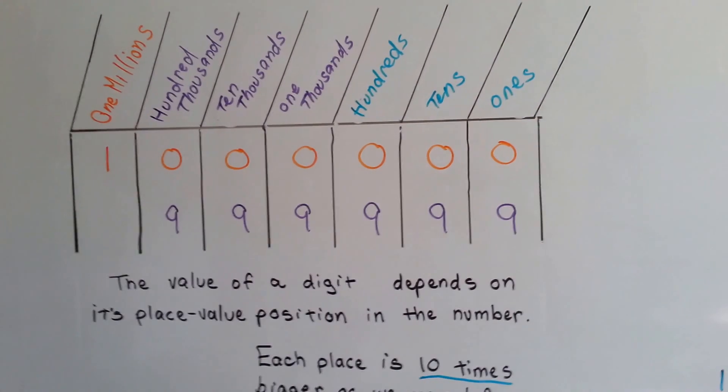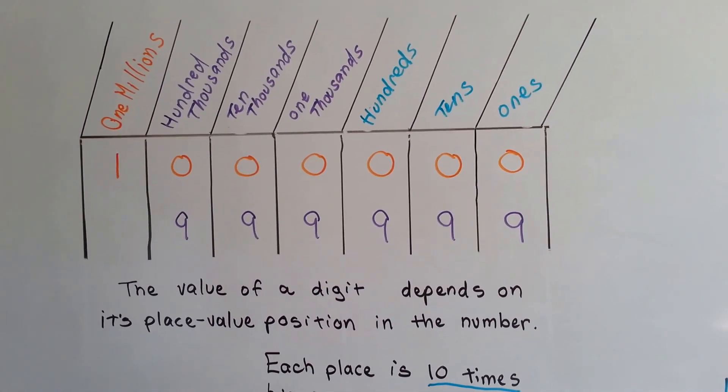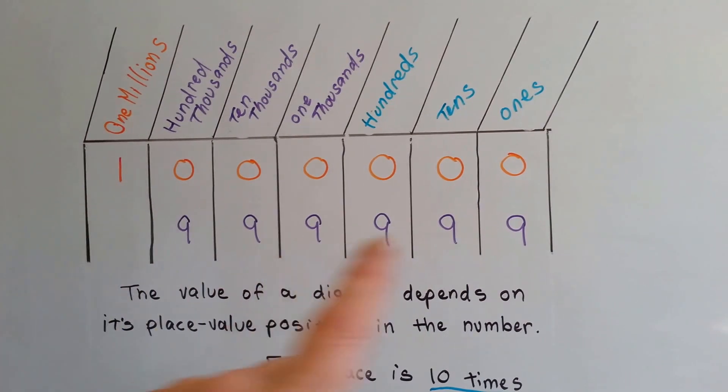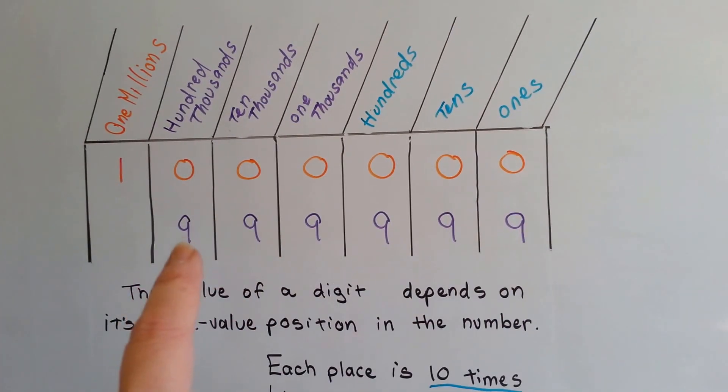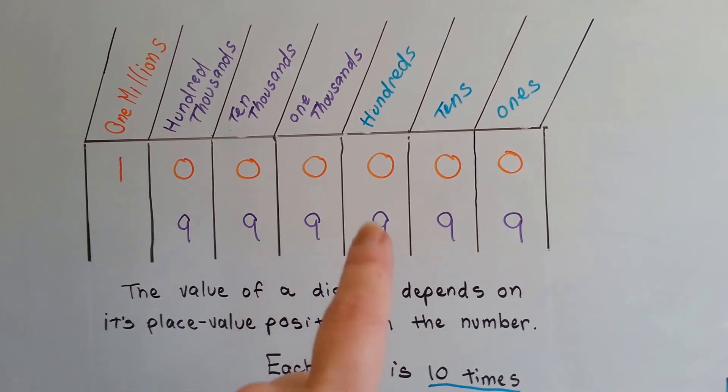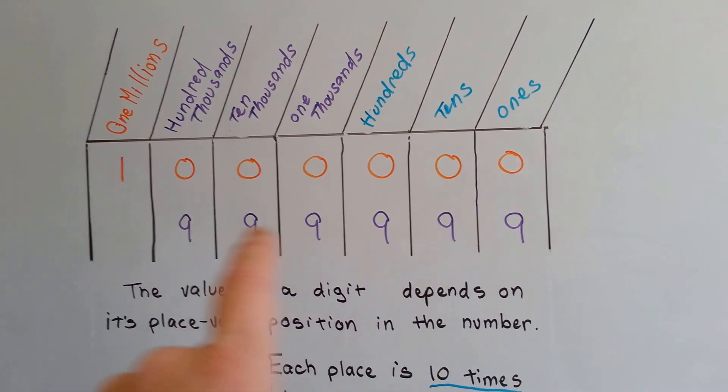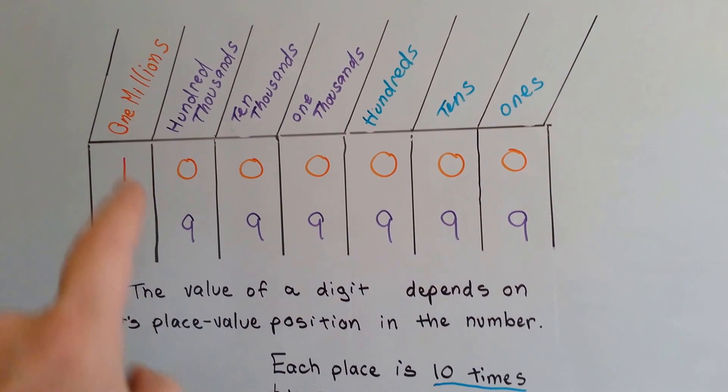The value of a digit depends on its place value position in the number. So this one million is one little digit bigger than 999,999. If you added one more to this number, it would become one million.